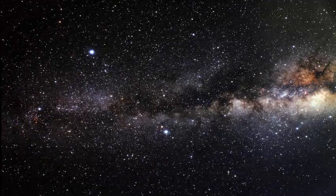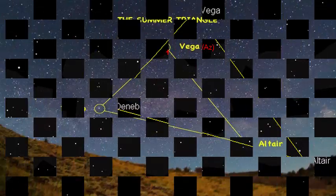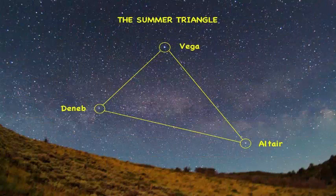But Deneb is one of the biggest known supergiant stars. Its luminosity is almost 200,000 times that of the sun, but at 2,600 light-years away it seems a rather striking star, but not particularly noticeable.